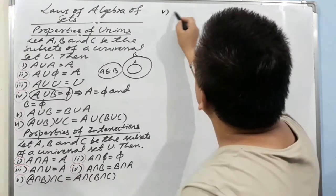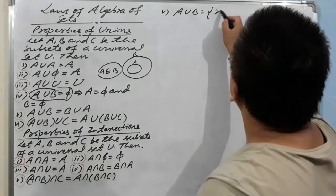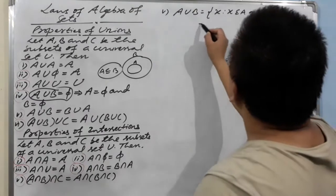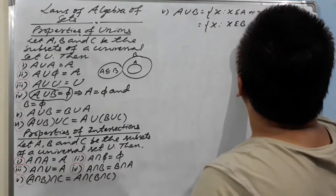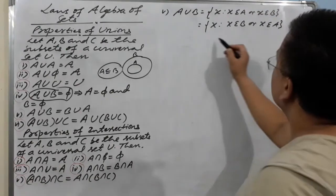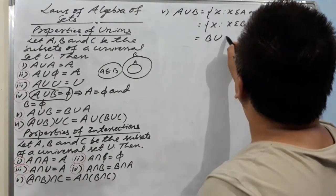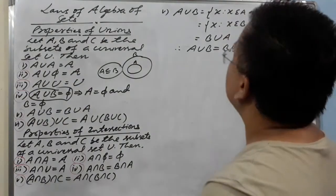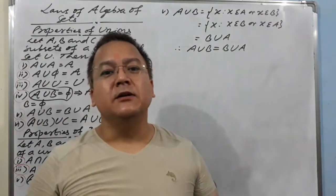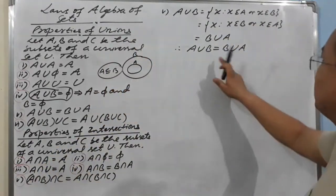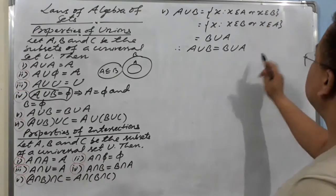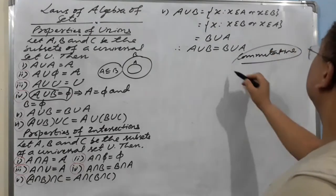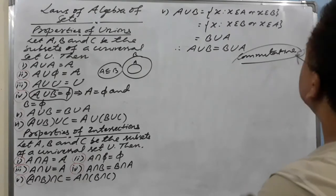Fifth: A union B — using the definition — equals {x such that x belongs to A or x belongs to B}. In this case order doesn't matter, so we can write x belongs to B or x belongs to A. Using the definition, this equals B union A. Therefore A union B equals B union A. This property is called the commutative property of sets.